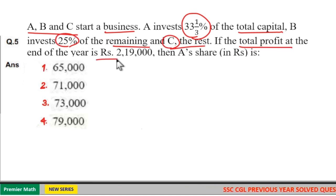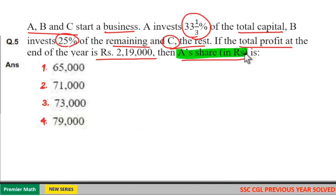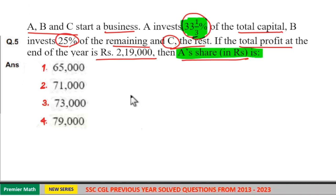Here we have to find out what is A's share. The question says A invests 33 into 1 by 3 percentage, that is 33 and 1/3 percentage, which means 100 by 3 percentage.